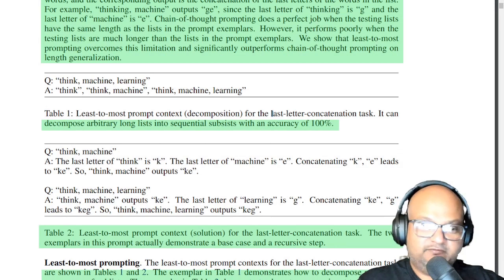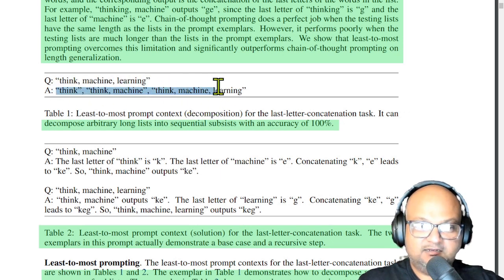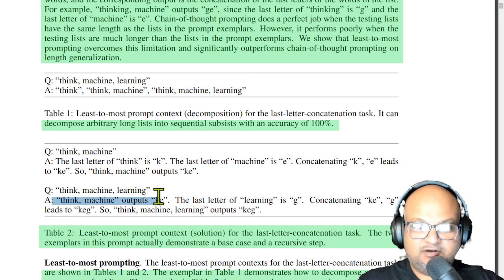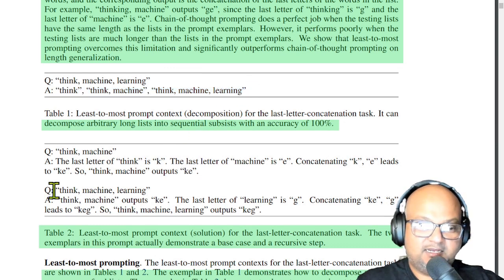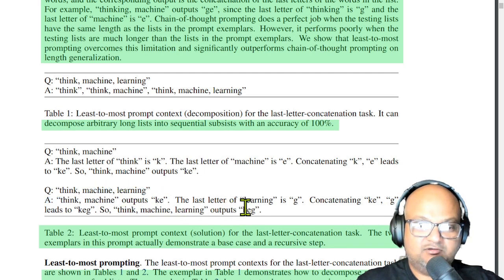The way we solve this with least to most prompting is to first decompose it into two problems. The first problem is to get sub-lists of your list, and then the second problem is to extract the last letters of each of the words within those sub-lists. So in your first prompt, given a list of words, you would construct all the sub-lists of that list. And in your second decomposition prompt, given a list of words, you would output the last letters of each of those words.